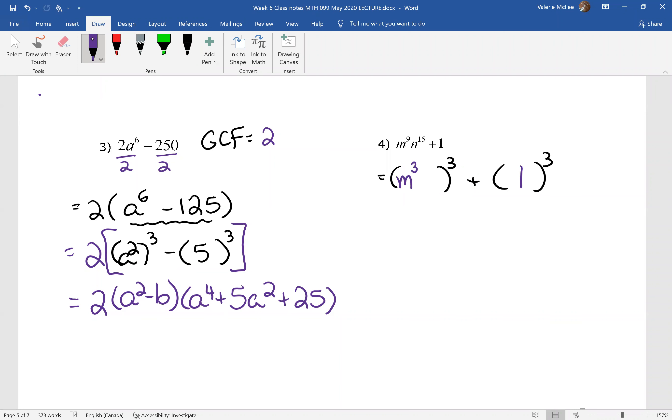Did you put an m³ there? Because 3 times 3 gives you the 9. n⁵. Because 5 times 3 gives us 15. So this is a sum. We start with a + b. a + b.